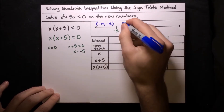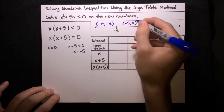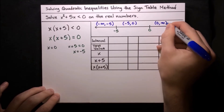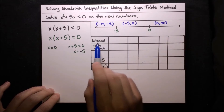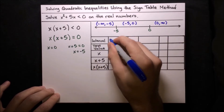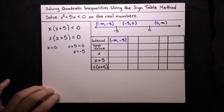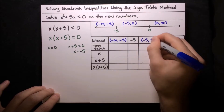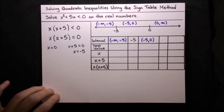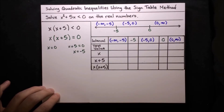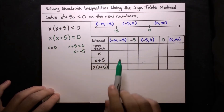And then from negative 5 to 0, so negative 5 comma 0. And then from 0 all the way to the right to positive infinity, so 0 to infinity. Now let's transfer this information down to our interval row. The interval row will contain: negative infinity to negative 5, then the point negative 5, then the interval negative 5 to 0, then the split point 0, and then the last interval 0 to infinity. Our goal is to figure out what is the sign of the function on each one of these intervals.